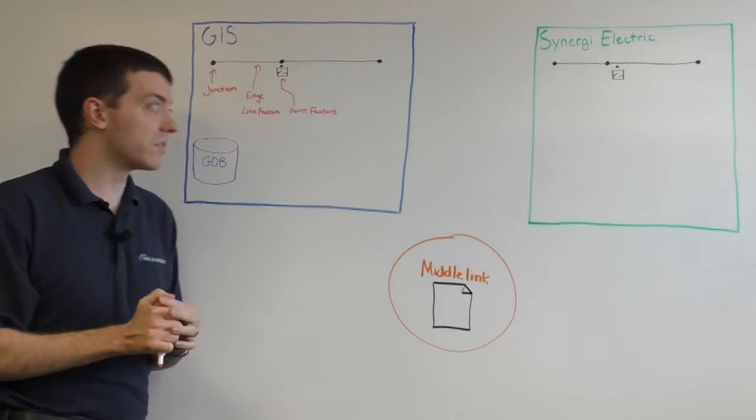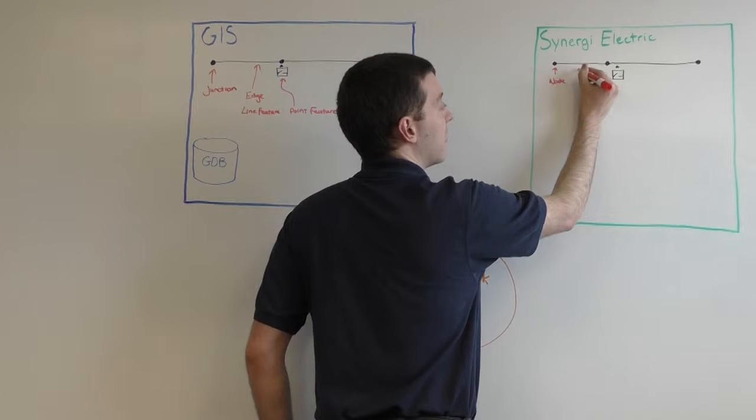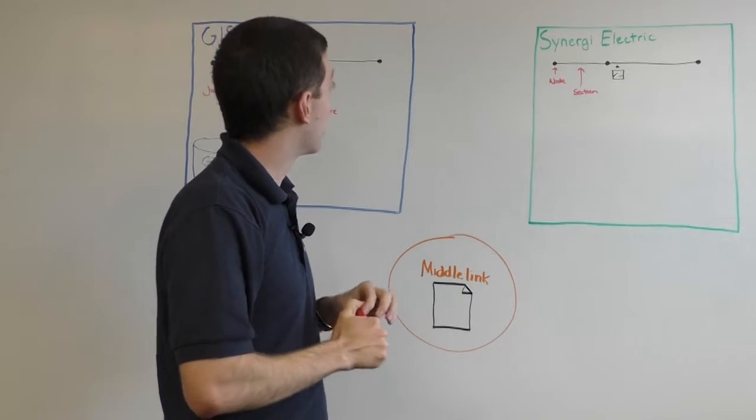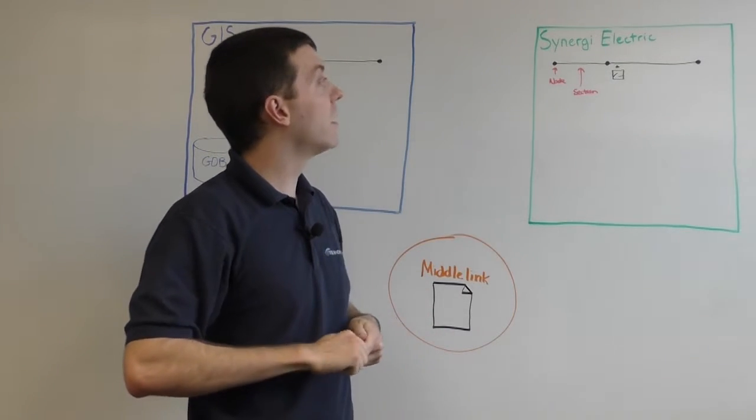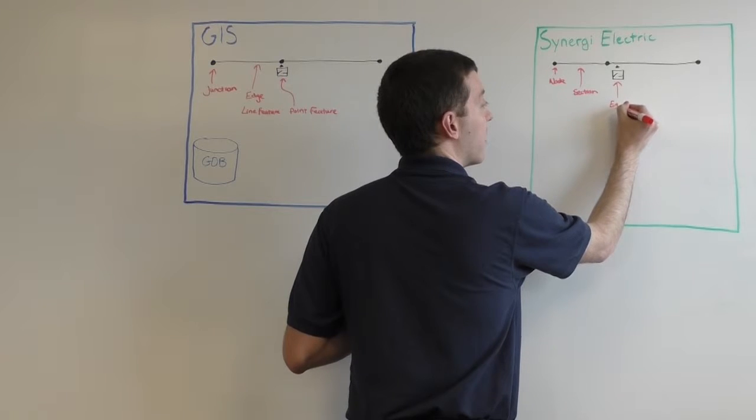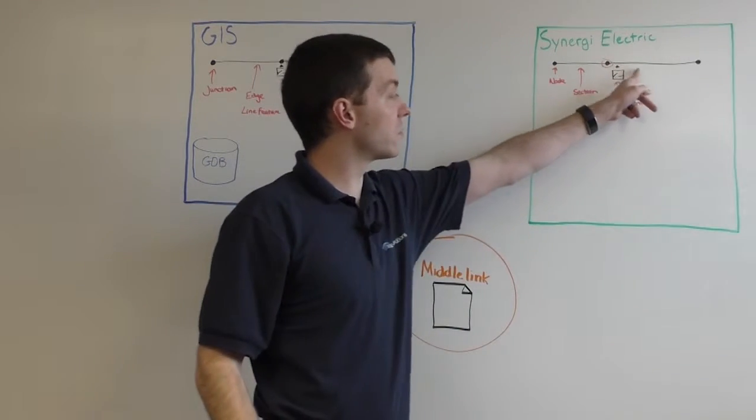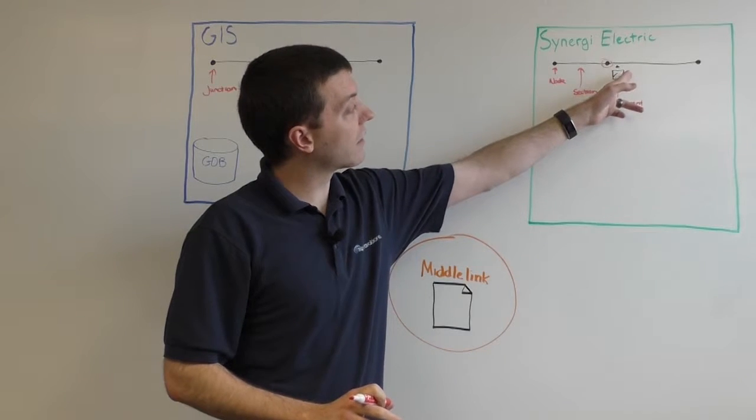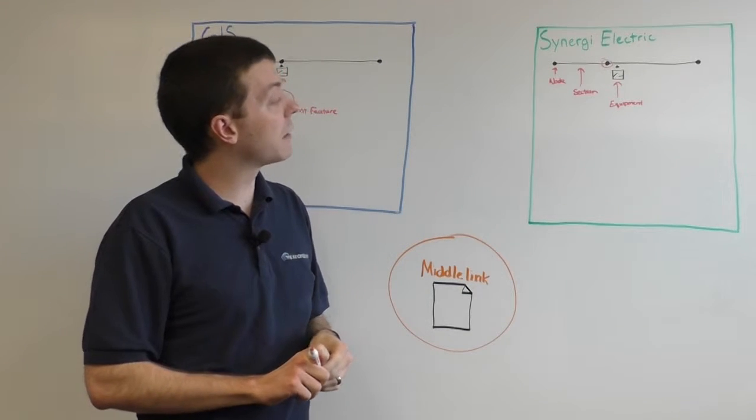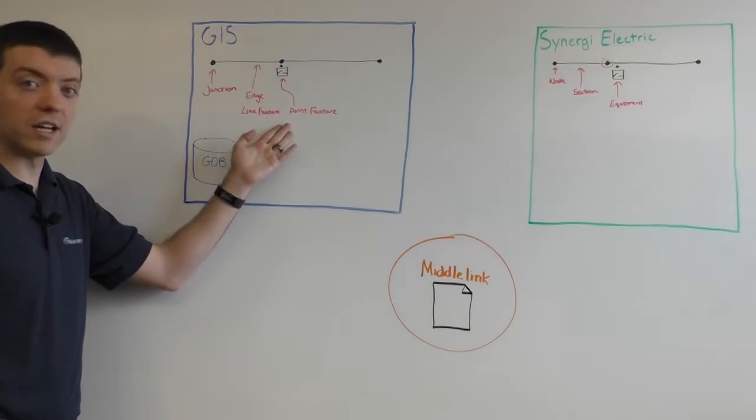In Synergy Electric, it's not quite that simple. So this point on Synergy Electric is actually called a node, and this line is called a section. The difference is, the extended data here, beyond just the shape data of the network, is going to be characterized differently. So this switch is going to be considered equipment, and this equipment doesn't actually correspond with this node. It instead corresponds with this section. In Synergy, you are allowed to place equipment on either the from node or the to node of a section, instead of actually being placed on the node. And that's important because that completely differs from this functionality on the GIS side.